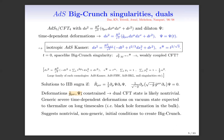One way to get intuition is: generic severe time-dependent deformations on a vacuum state might thermalize on long time scales, dual to black hole formation in the bulk. However, here we have a big crunch singularity — not a black hole — which suggests one has to do something special. This class of constrained deformations does it. Overall, this suggests that perhaps there are non-trivial, non-generic initial conditions required to construct such cosmologies.